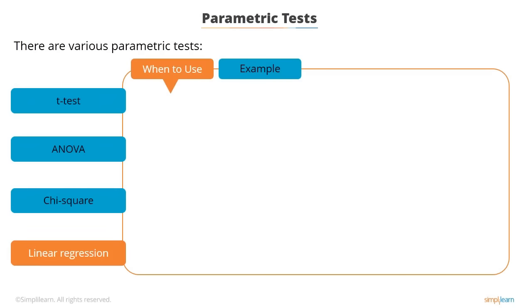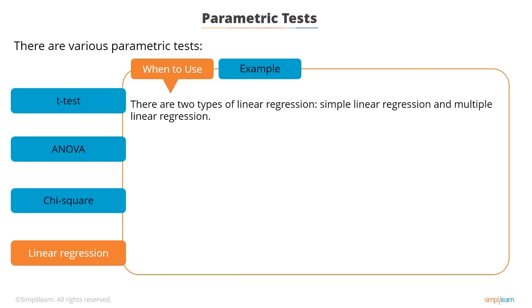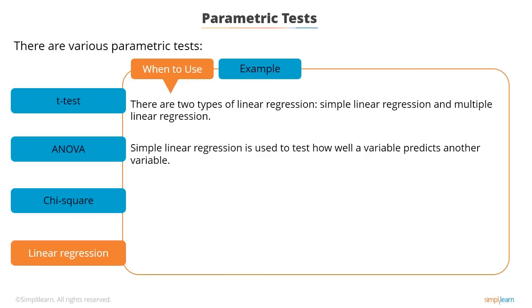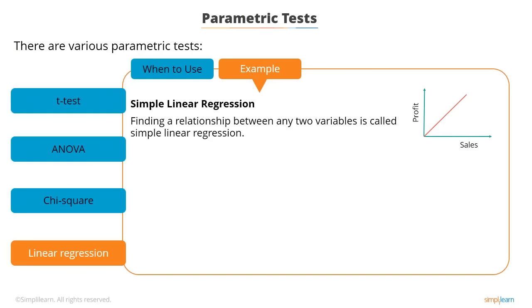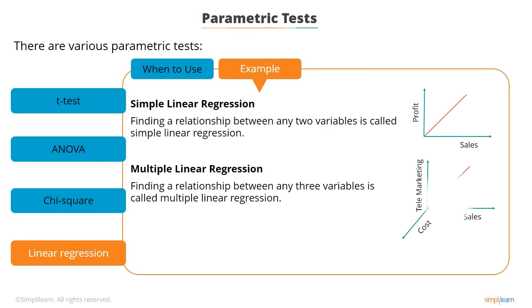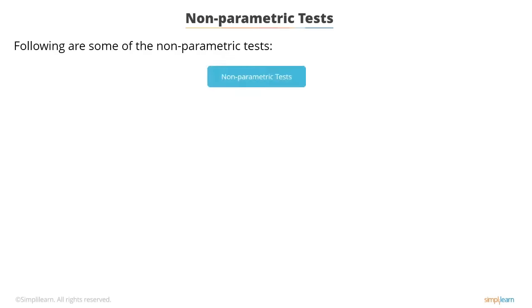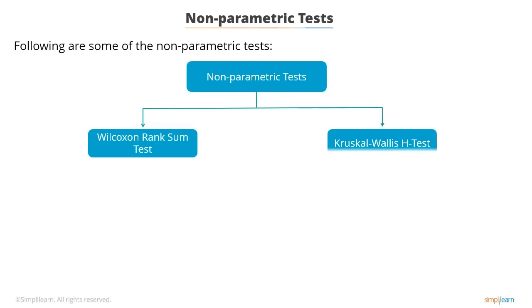Linear regression comes in two types: simple linear regression and multiple linear regression. Simple linear regression is used when one wants to test how well a variable predicts another variable. Multiple linear regression allows testing how well multiple independent variables predict a variable of interest, additionally assuming the predictor variables are independent. For example, finding the relationship between two variables such as sales and profit is simple linear regression, while finding the relationship between three variables such as sales, cost, and telemarketing is multiple linear regression. Non-parametric tests include the Wilcoxon rank sum test and the Kruskal-Wallace H-test.